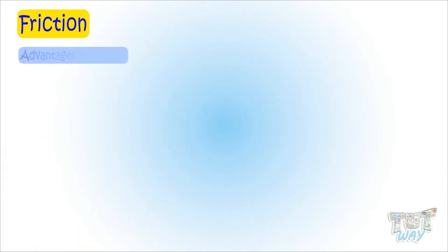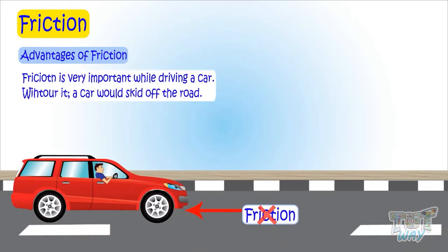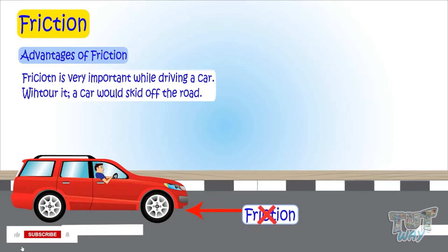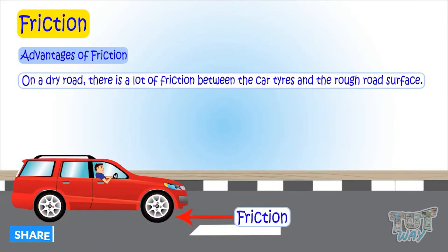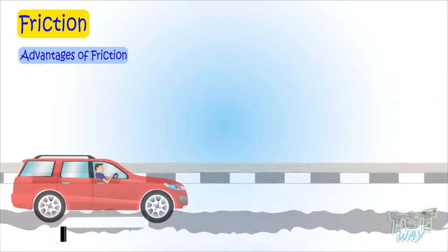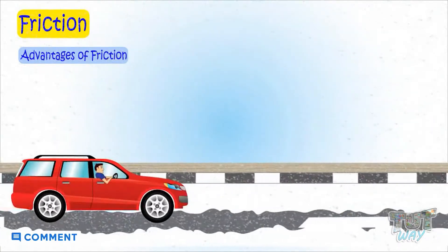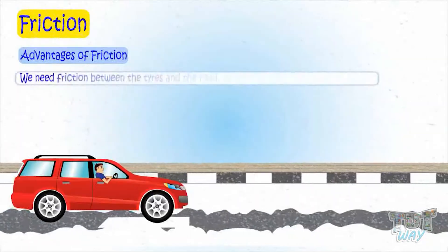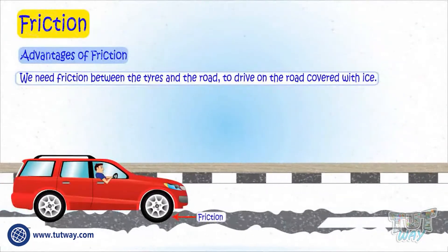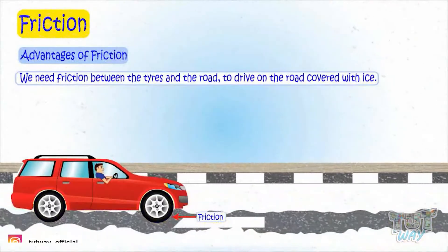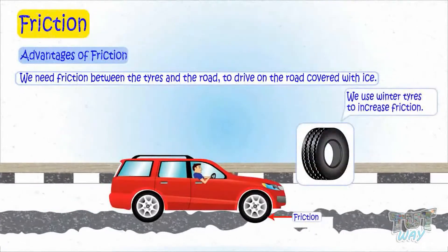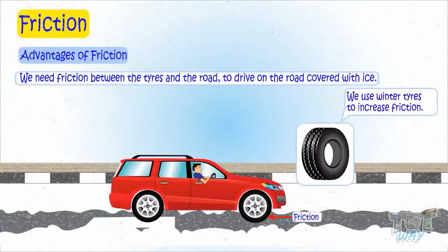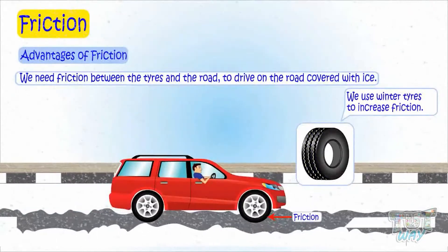Now let's learn the advantages of friction. Friction is very important while driving a car — without it, a car would slide off the road. On a dry road, there is a lot of friction between the car tires and the rough road surface. In winters, there is snow or ice on the road, which makes the surface very smooth, and there is little friction between the tires and the road, causing the tires to slip. This is why we need winter tires, which have special grooves to increase friction in snowy and icy conditions.